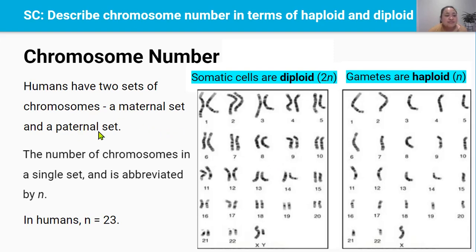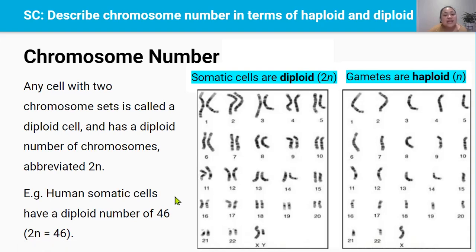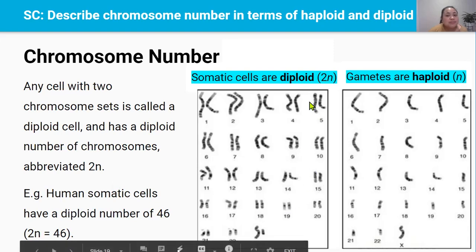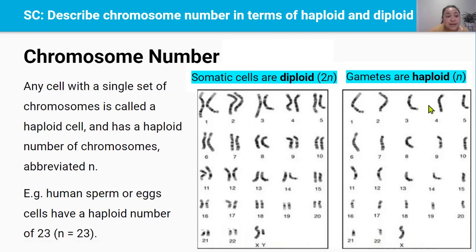The number of chromosomes in a single set is represented by N. Any cell with two chromosome sets is called a diploid cell, and diploid cells have a diploid number of chromosomes, abbreviated as 2N. For humans, the diploid number of chromosomes is 46, because 2N equals 46 — this is the number of chromosomes in our somatic body cells. But unlike somatic cells, gametes — sperm and eggs — contain a single set of chromosomes. Such cells are called haploid cells, and haploid cells have a haploid number of chromosomes, abbreviated as N. For humans, the haploid number is 23.